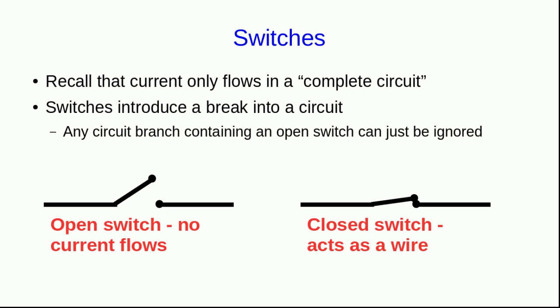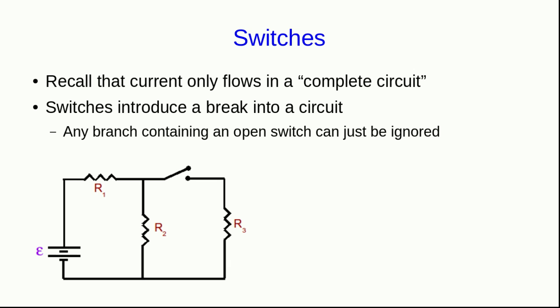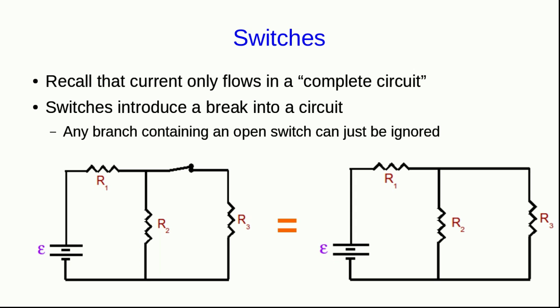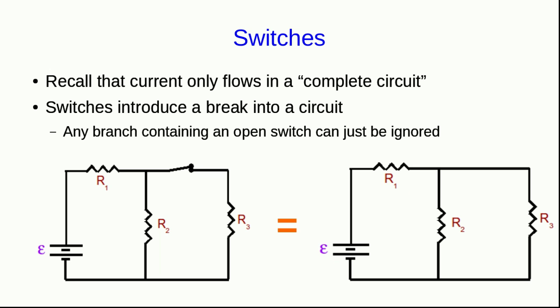Any circuit branch containing an open switch can just be ignored, because no current will move through it. So, for example, in this circuit, when the switch is open, it's completely equivalent to this simpler circuit, where the branch containing R3 is just gone. But as soon as we close the switch, now it's equivalent to this circuit.